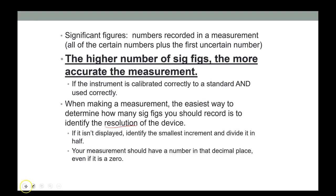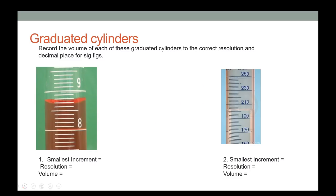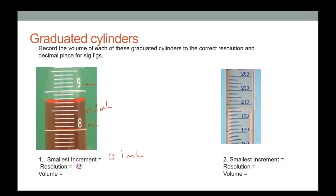Looking at some graduated cylinders: for this one, if 8 and 9 milliliters are marked, each line is 0.1 milliliters. The smallest increment is 0.1 mL; the resolution is therefore 0.05 mL.